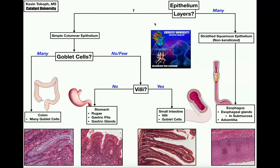This video is going to be the first part in a two or three part segment where we look at the histology of the digestive system. We're going to learn to differentiate the four major segments of the digestive tract, which in order are the esophagus, the stomach, the small intestine, and the colon, also called the large intestine. We will frequently be coming back to a flowchart which will help us learn the unique features of each segment.